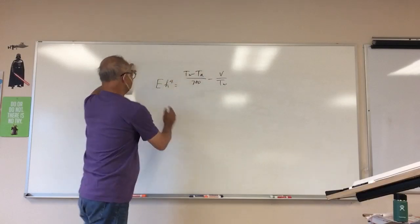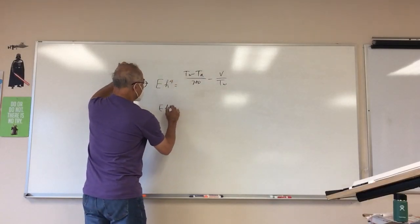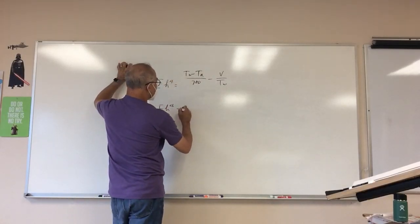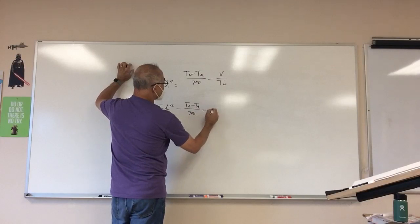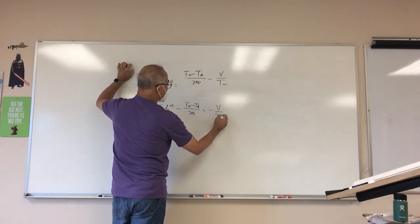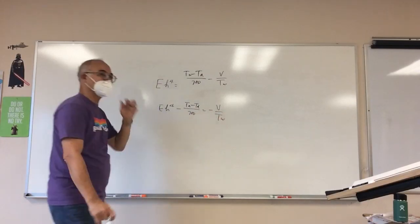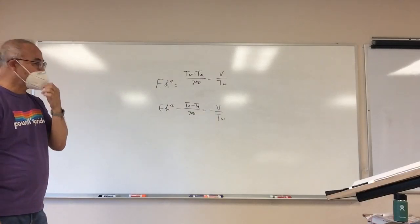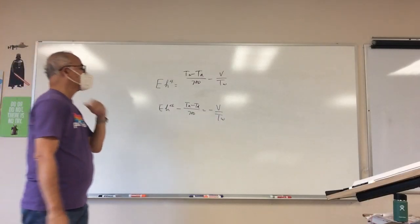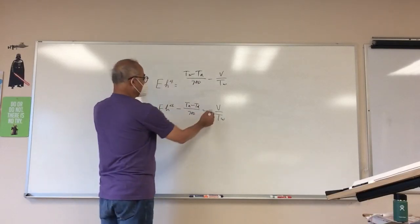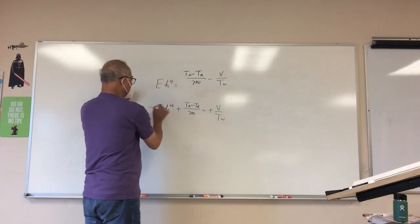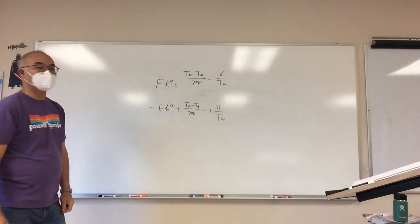I'm going to move this guy over. So I'm going to get E H to the 4th minus T A minus T D over 700 is equal to minus V over T W. Are we good? I have this minus, I need to get rid of it. So I do that.